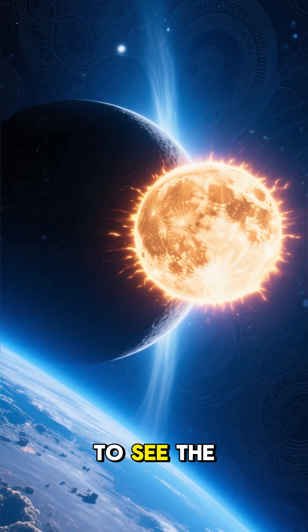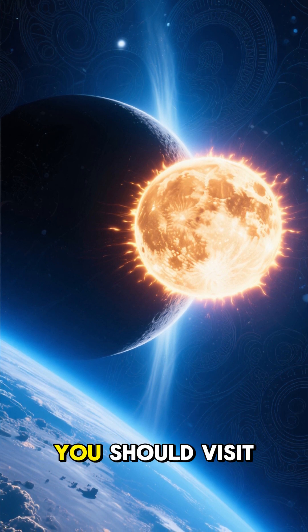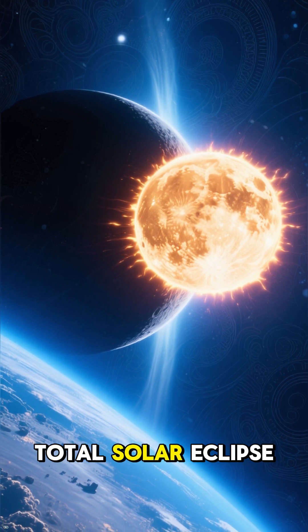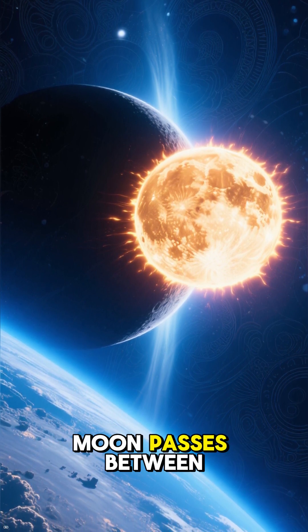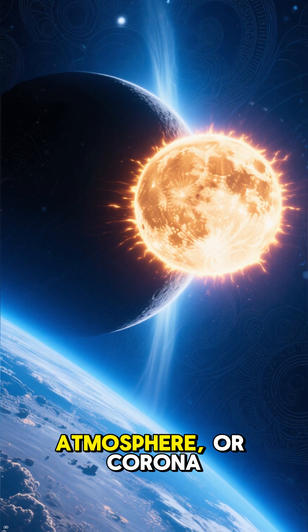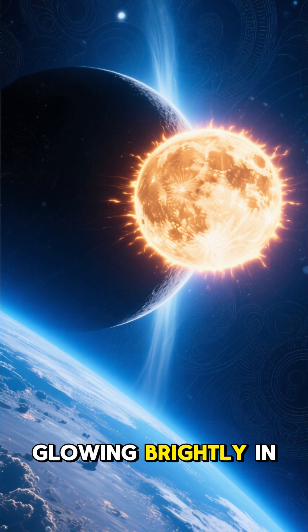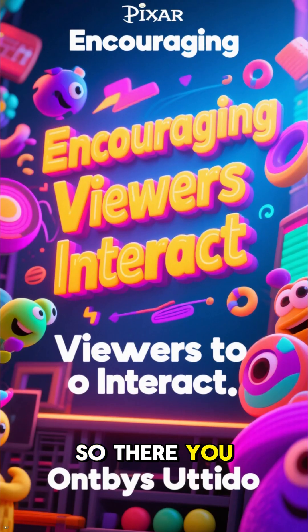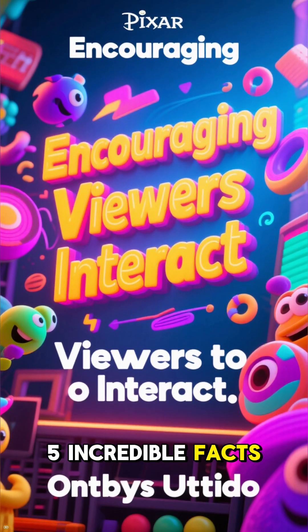Number 5: If you want to see the Sun in all of its glory, you should visit it during a total solar eclipse. That's when the Moon passes between the Sun and Earth. And for a few minutes, you can see the Sun's outer atmosphere, or corona, glowing brightly in all directions. So there you have it, 5 incredible facts about the Sun.